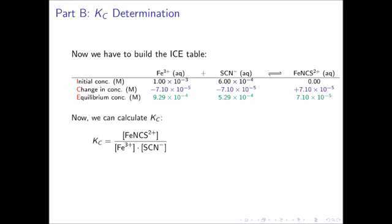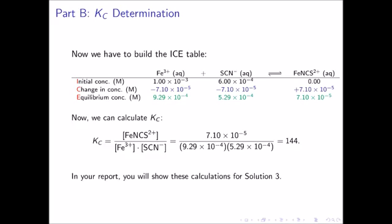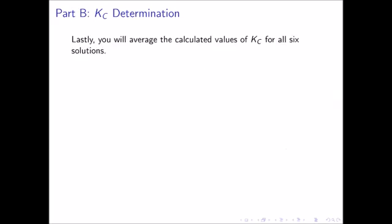We can now calculate Kc for solution 4. Kc has the concentration of the ferric thiocyanate complex in the numerator, and the iron 3+ concentration times the thiocyanate concentration in the denominator. Substituting in values from the equilibrium row: 7.10 times 10 to the negative 5 in the numerator, and 9.29 times 10 to the negative 4 times 5.29 times 10 to the negative 4 in the denominator, gives a Kc value of 144. In your report, you will show these same calculations for solution 3. The last calculation is to average the Kc values for all six solutions; they should be similar, and the average will represent the overall equilibrium constant.